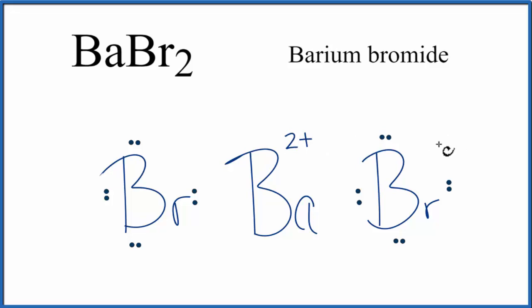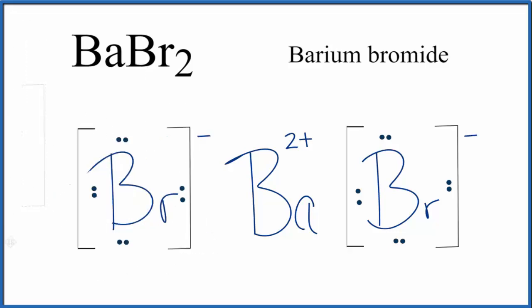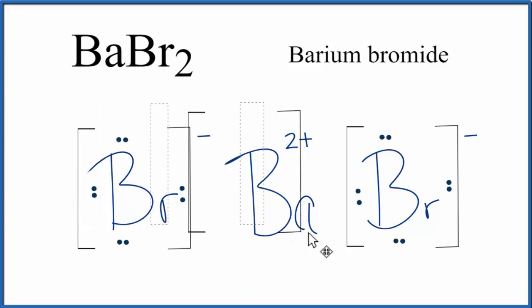Bromine, each one gained one electron, so it has a negative charge, negative 1. We should put brackets on our negative ions here. And you often see brackets around the positive ion. The reason we put the brackets here is to show that those two electrons that barium transferred to the bromines were lost by the barium and gained by the bromines. So there's no sharing going on with those valence electrons like we might find in a covalent compound.